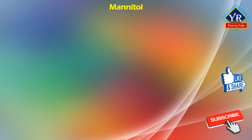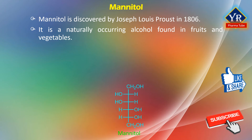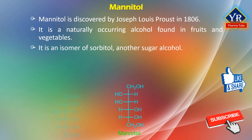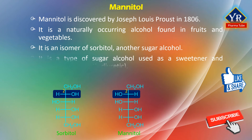Mannitol. The discovery of mannitol is attributed to Joseph Lewis Proust in 1806. Mannitol is a naturally occurring alcohol found in fruits and vegetables and used as an osmotic diuretic. It is an isomer of sorbitol, which is another sugar alcohol. These two sugars differ only in the orientation of the hydroxyl group on carbon-2. These two sugar alcohols are obtained from different sources in nature and have different melting points and uses.